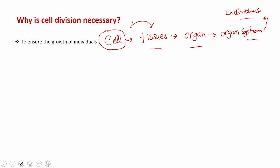If the cells do not divide, do not undergo division, there will be no tissue, because tissues are the combination of cells and are larger structures than cells. If there are only a few cells in an individual and they do not tend to undergo division, no different types of tissue will be formed, and hence no organ systems and no complete individual will be formed. So cell division is necessary to ensure the growth of individuals in terms of organ systems and different organs.